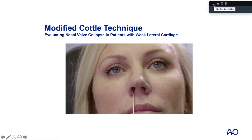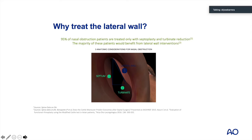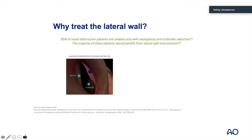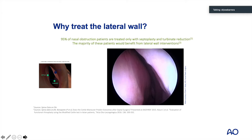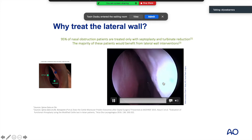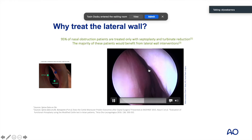When treating the lateral wall, there are several things to consider. Currently 95% of nasal obstructions are treated with septoplasty and turbinate reduction. However, when a patient has lateral wall insufficiency — as seen on endoscopic view with continued collapse — if the lateral wall is not addressed, the patient will continue to have obstruction.